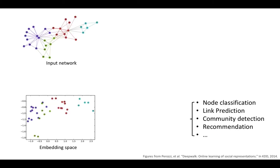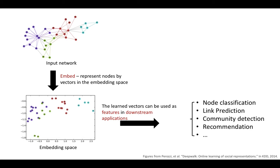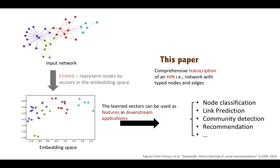The vectorized representations from network embedding can be easily combined with off-the-shelf machine learning algorithms for various tasks. In this paper, we aim to ensure the quality of the embedding step and study the problem of comprehensive transcription of an HIN.